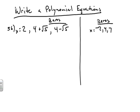The Linear Factorization Theorem — that's a mouthful — states that when you have a polynomial, the degree equals the total number of zeros. It also states that all the zeros can be written as a product of linear factors.